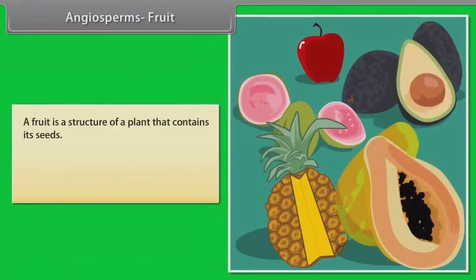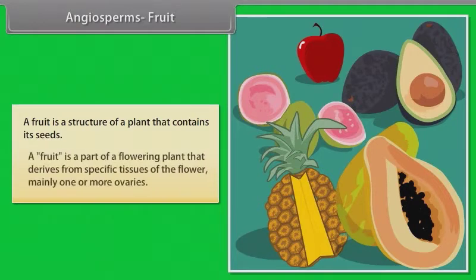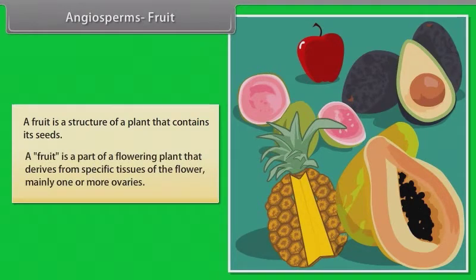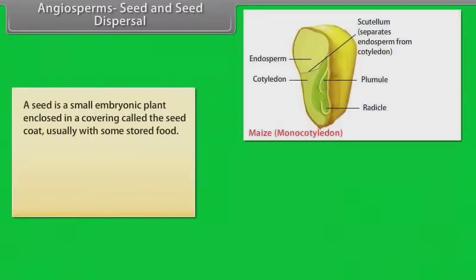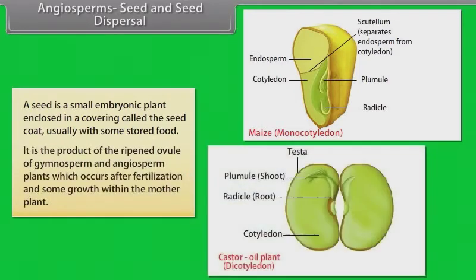A fruit is a structure of a plant that contains its seeds. A fruit is a part of a flowering plant that derives from specific tissues of the flower, mainly one or more ovaries. A seed is a small embryonic plant enclosed in a covering called the seed coat, usually with some stored food. It is the product of the ripened ovule of gymnosperm and angiosperm plants which occurs after fertilization and some growth within the mother plant.